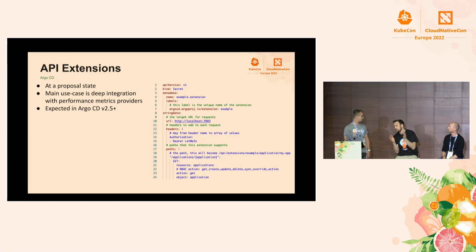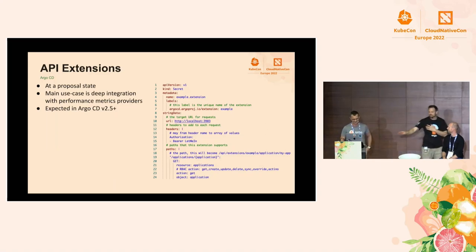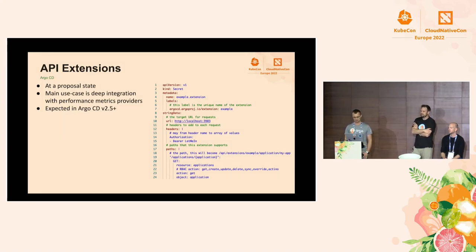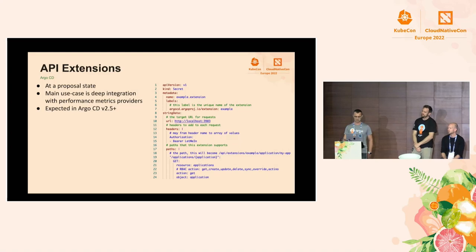There's also an API extension feature in the plans. We want to be able to visualize data that's outside of Kubernetes. We're hoping to introduce a way for administrators to register additional API endpoints that would proxy requests to systems like Datadog or Prometheus. Argo CD would apply role-based access checks, giving you the opportunity to reuse Argo CD's SSO and access control model to provide access to resources which are not part of Argo CD.